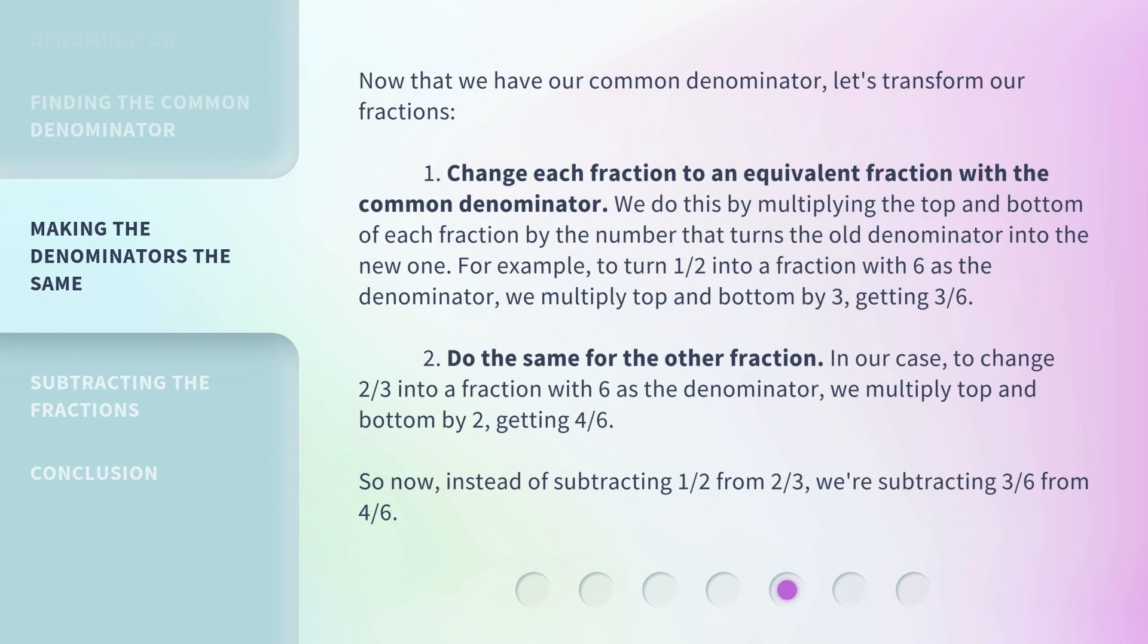Now that we have our common denominator, let's transform our fractions. 1. Change each fraction to an equivalent fraction with the common denominator. We do this by multiplying the top and bottom of each fraction by the number that turns the old denominator into the new one. For example, to turn 1 half into a fraction with 6 as the denominator, we multiply top and bottom by 3, getting 3 sixths.